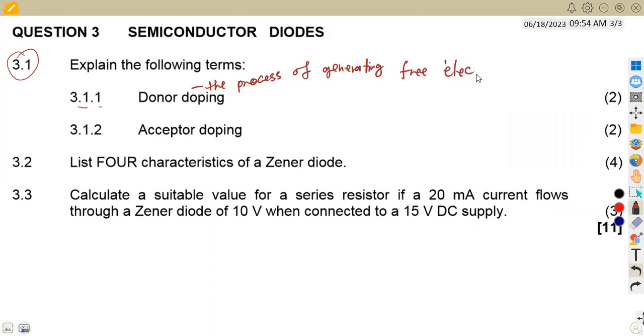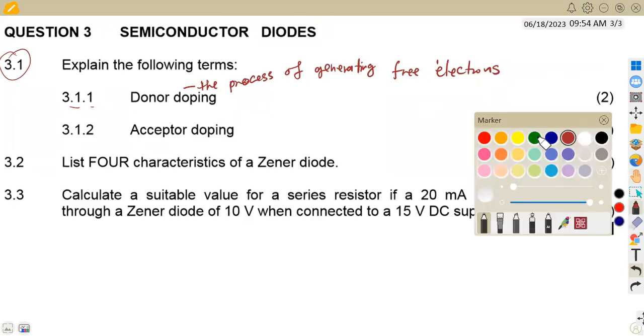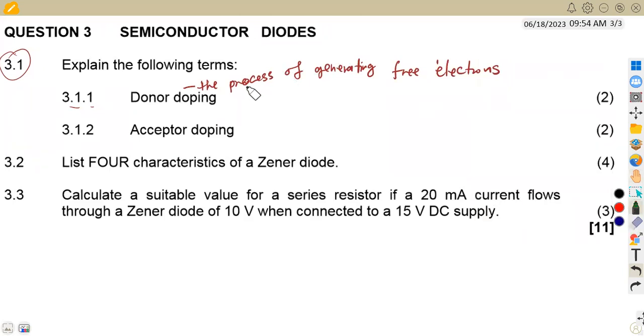So this one we are talking about generating free electrons. They might give you some of the definitions and ask you, is it true or false? So you need to know your definitions so that when they give you an answer, you must be able to tell, is it true or is it false?